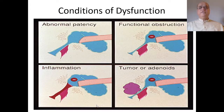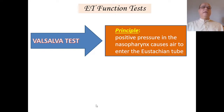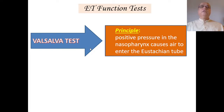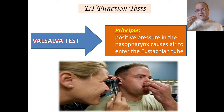One of the most commonly used methods in outdoor clinics, very easy to perform, is what we call the Valsalva test. It is based on the principle that if there is positive pressure in the nasopharynx, this will cause air to enter the Eustachian tube and from there into the middle ear cavity, and the tympanic membrane will move outwards laterally.